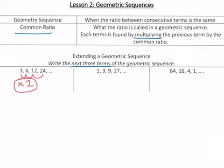So the next three terms is just multiplying by 2. So 24 times 2 is 48, 48 times 2 is 96, 96 times 2 is 192. And those are the next three terms of the geometric sequence.